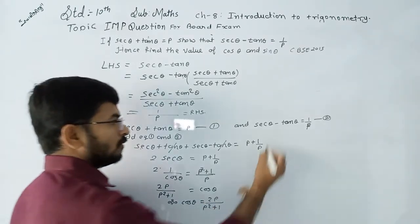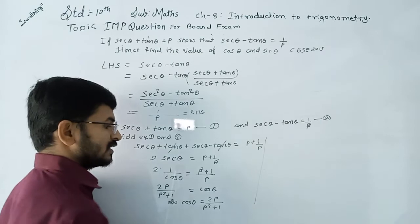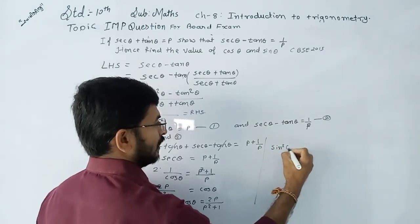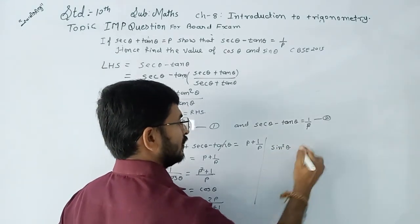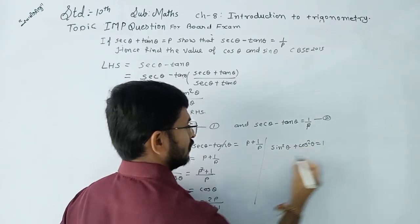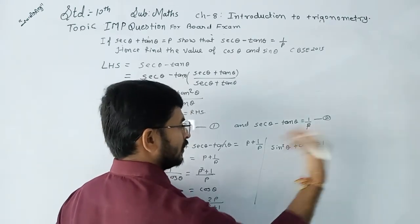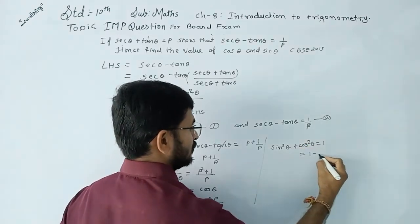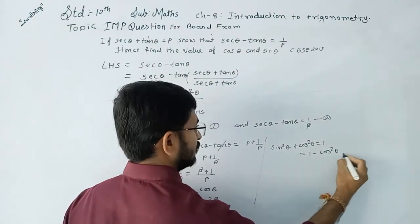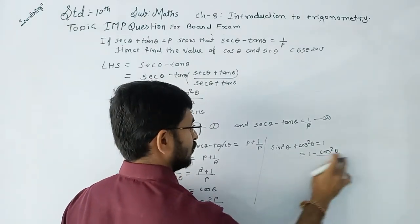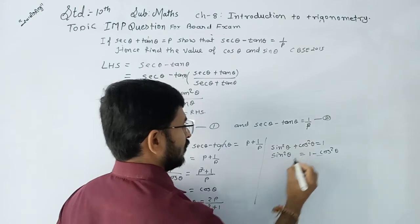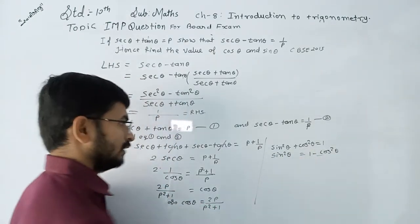Now using the identity sin²θ + cos²θ = 1, so 1 - cos²θ = sin²θ. We substitute the value of cos θ.